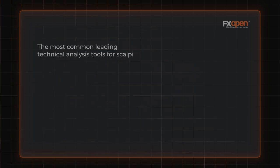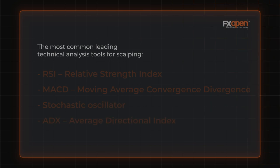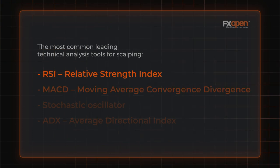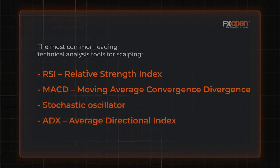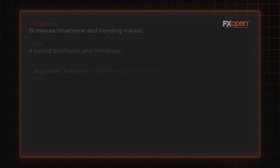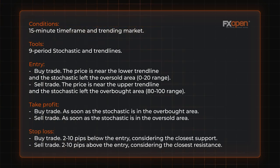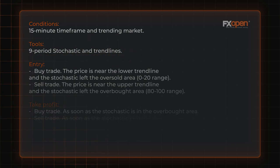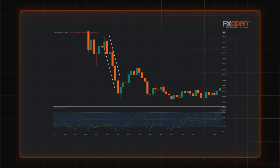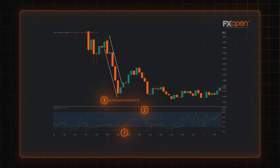Traders also use technical analysis for scalping. It might be worth using leading indicators as they can forecast a trend reversal. The most common leading tools are the Relative Strength Index, Moving Average Convergence Divergence, Stochastic Oscillator, and Average Directional Index. The strategy using the Stochastic Oscillator is usually applied to a 15-minute timeframe when a market moves within a solid trend. The common Stochastic setting is a length of 9. On this chart, a buy condition occurred once the indicator left the oversold area. The trade would be closed with profit when the Stochastic entered the overbought zone, with a stop loss of 10 pips to limit risks.